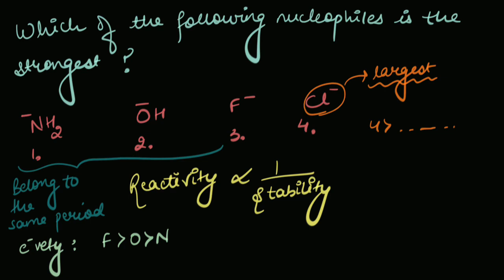So one that's most electronegative would keep the electron density or the negative charge in a much more stable manner than the other two. Correct? So F- would be more stable than OH- which would be more stable than NH2-.